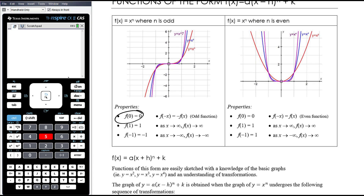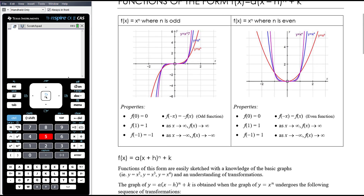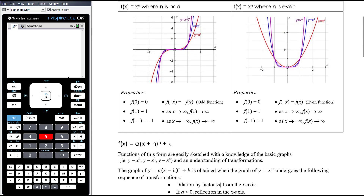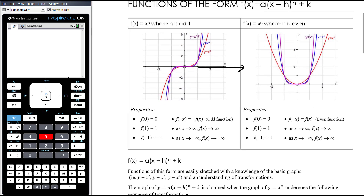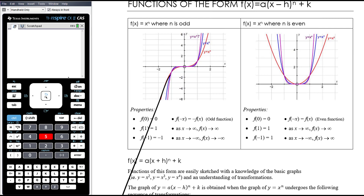Properties summarised: f(0) = 0, so the graph goes through the origin. f(1) = 1, it goes through the point (1, 1). f(−1) = −1, it goes through the point (−1, −1). Also, f(−x) = −f(x) — this is an example of an odd function, and we'll come back to that idea in the next topic on functions and relations. As x approaches positive infinity, f(x) also approaches positive infinity. As x approaches negative infinity, f(x) approaches negative infinity — so the graph goes down as we head out to the left.